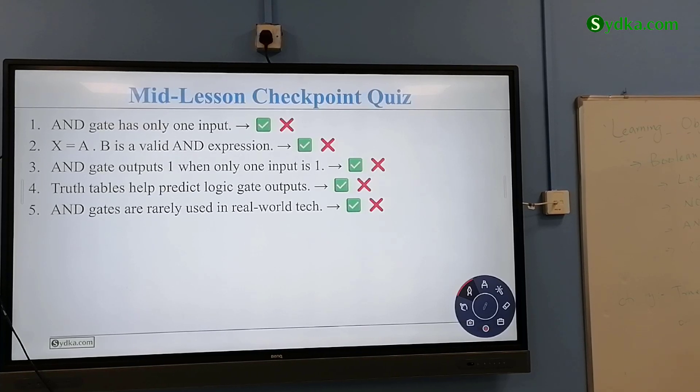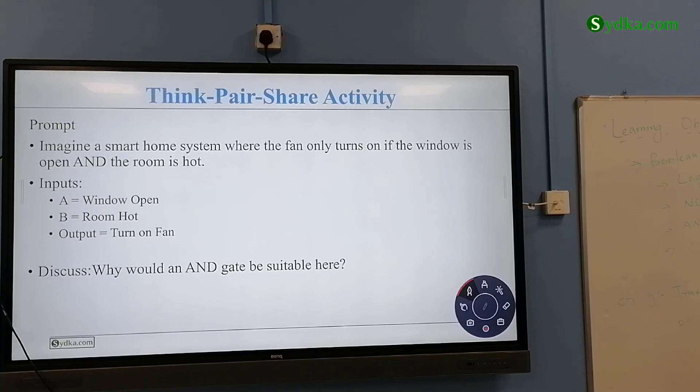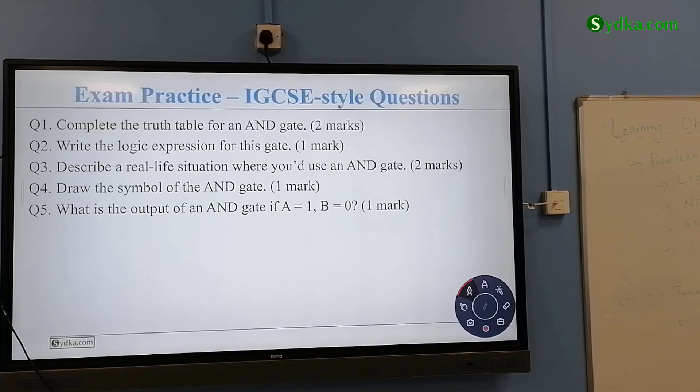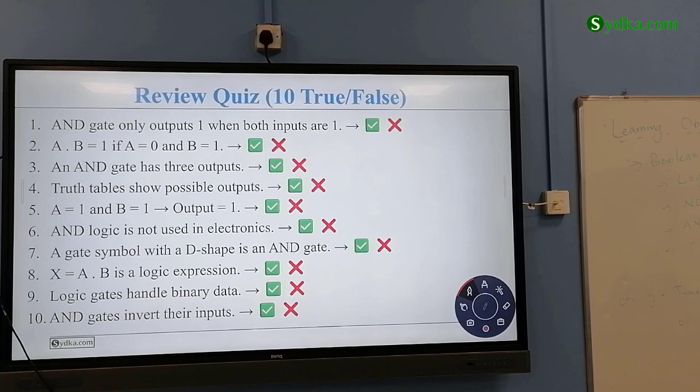AND gates are really used in the real world. Next we have, imagine a smart home system where the fan only turns on if the window is open and the room is hot. Can you explain to me why? Discuss: A is equal to window open, B is equal to room hot. Good, good. So if both are true then the fan can be on. If one of them are not, then it's not.